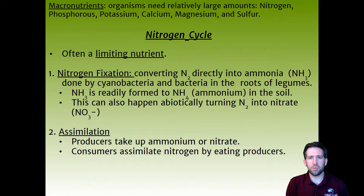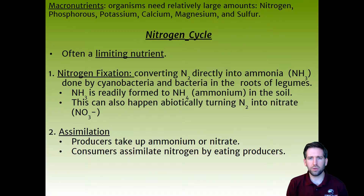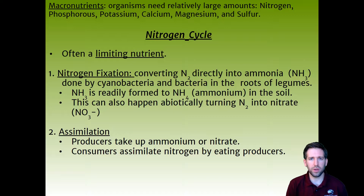Next is the more involved nitrogen cycle. We begin with macronutrients and limiting nutrients. Nitrogen, phosphorus, potassium, calcium, magnesium, and sulfur are all macronutrients — needed in large amounts for building tissue, bones, and supporting the nervous system. A limiting nutrient limits the growth of something in an environment. While nitrogen is readily available in the atmosphere, it is not the most available in soil, so it can limit plant growth.